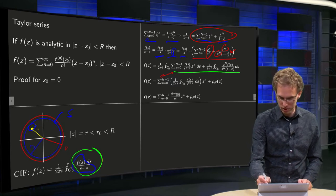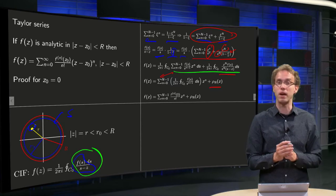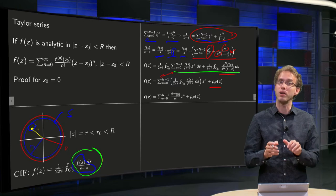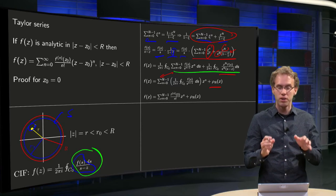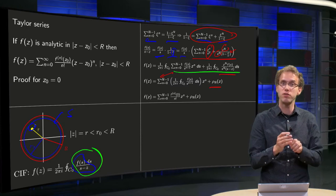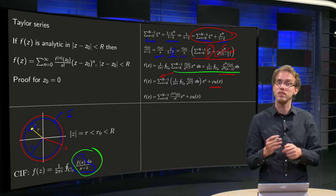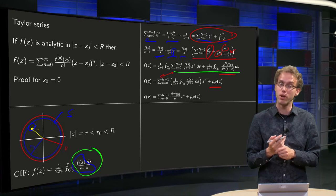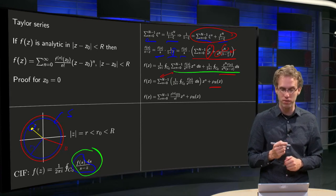And we have some rubbish, and we call the rubbish ρ capital N of z. And now we are going to show that this first part converges to the series we want, and ρN of z is the remainder, and we are going to show that that goes to zero if capital N goes to infinity.